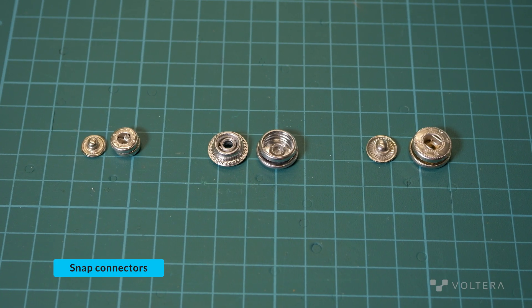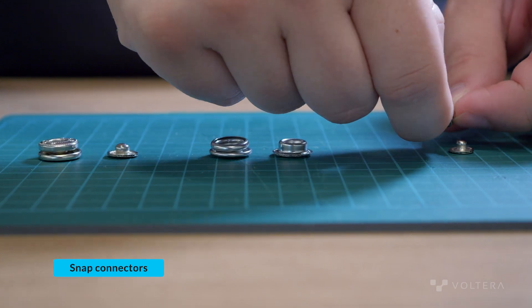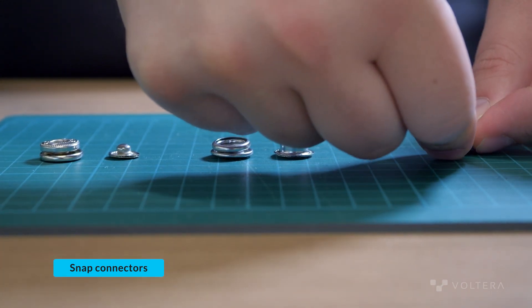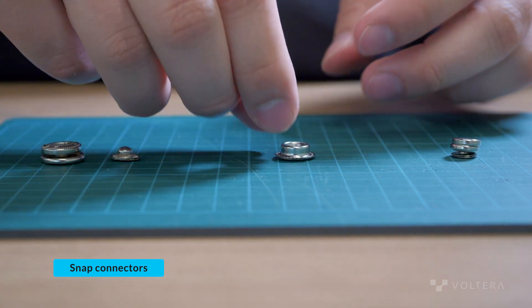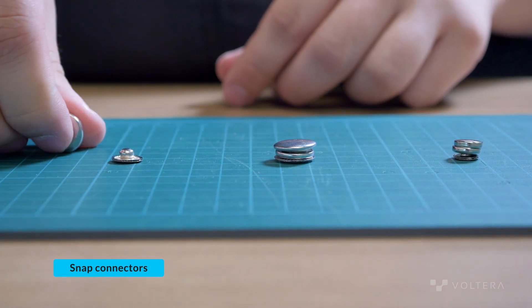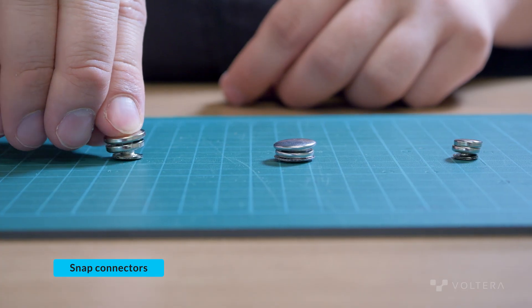The benefits of using snap connectors include that they can be extremely small, they're durable, and they can be connected and disconnected at will. Snap connectors are commonly used in connecting medical devices, smart garments, and e-textiles.